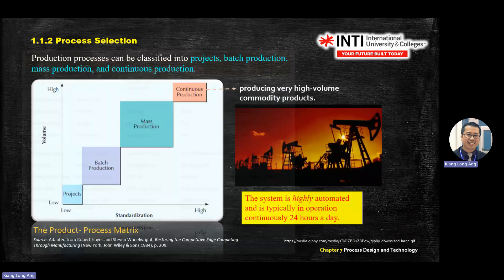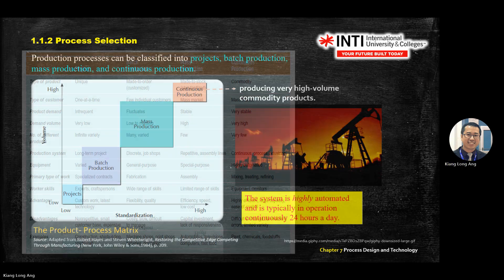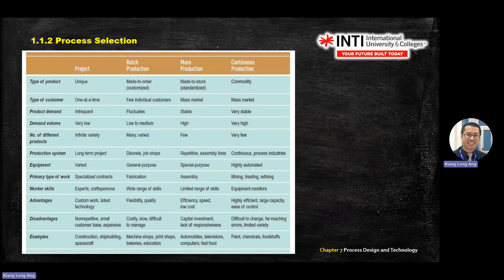Continuous production is like oil and gas — you need to continuously supply. You operate 24 hours a day; it's a continuous process. There is a summary table from type of product to examples — review this on your own.